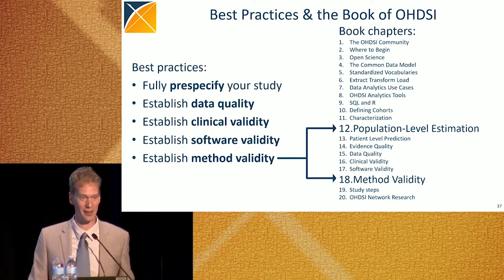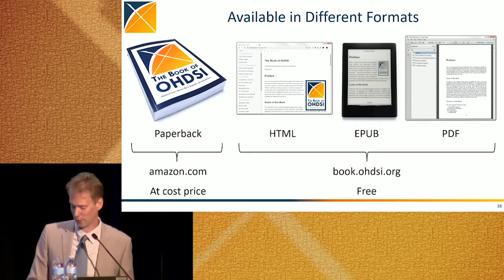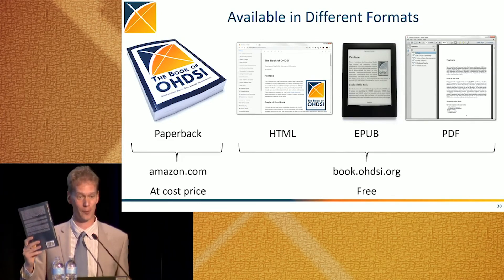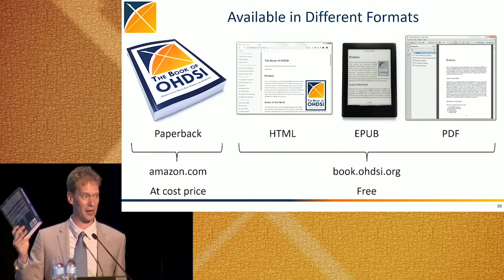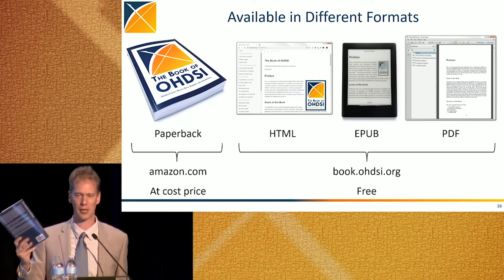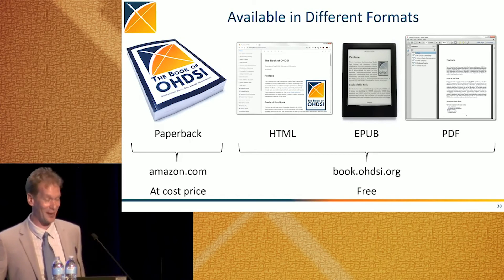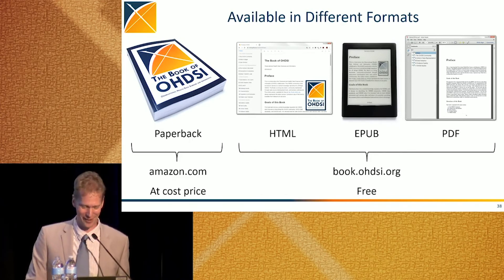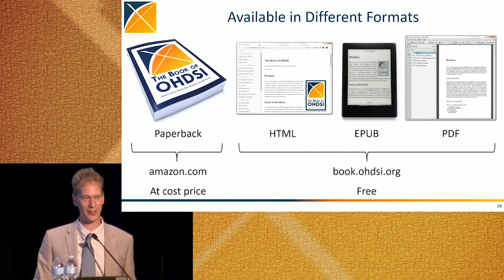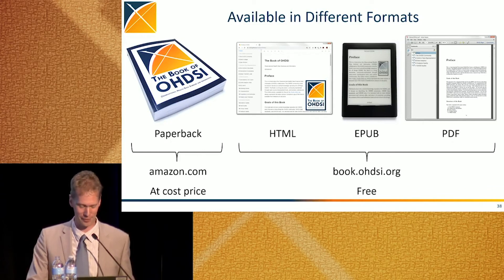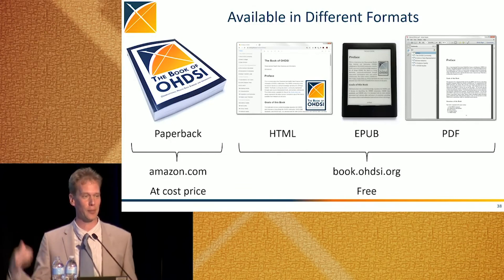The best practices we presented, you should be able to achieve them with what you read in the book. The book is available in different formats — this is the paperback version, available from Amazon.com at cost price, which is about $11. If you'd prefer a free version, it's on book.odyssey.org as an HTML version to read in your browser, an EPUB version for your e-reader, and even a PDF version you could print yourself.